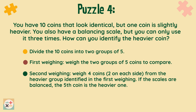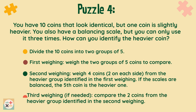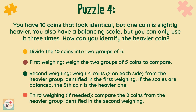For the second weighing, weigh 4 coins — 2 on each side — from the heavier group identified in the first weighing. If the scales are balanced, the fifth coin that you didn't weigh is the heavier one. If the scales didn't balance, you will need a third weighing. Compare the two coins from the heavier group identified in the second weighing. You will have now narrowed it down to the heavier coin.